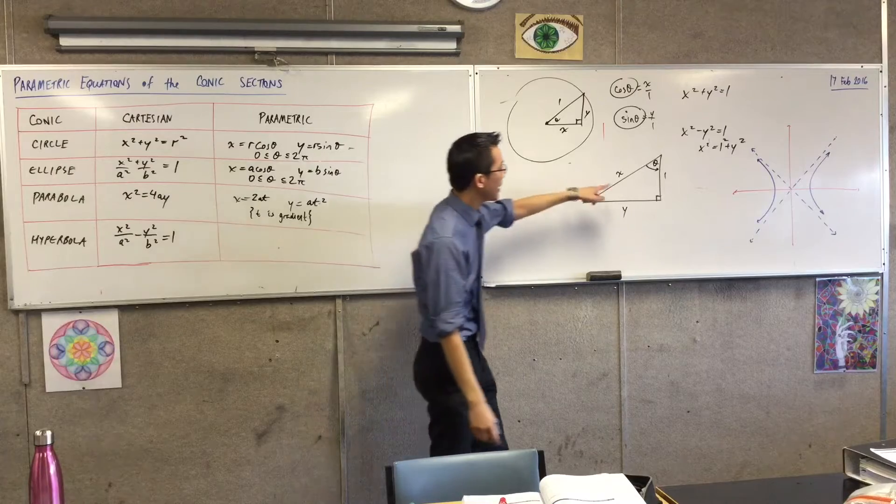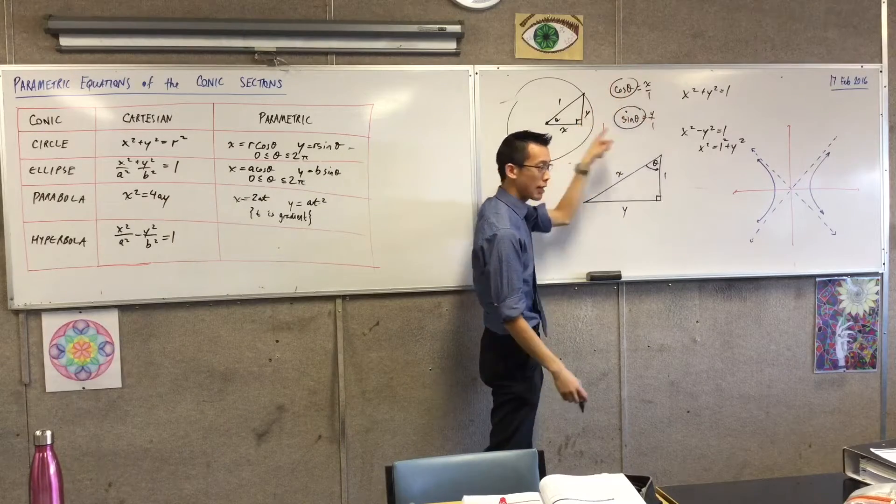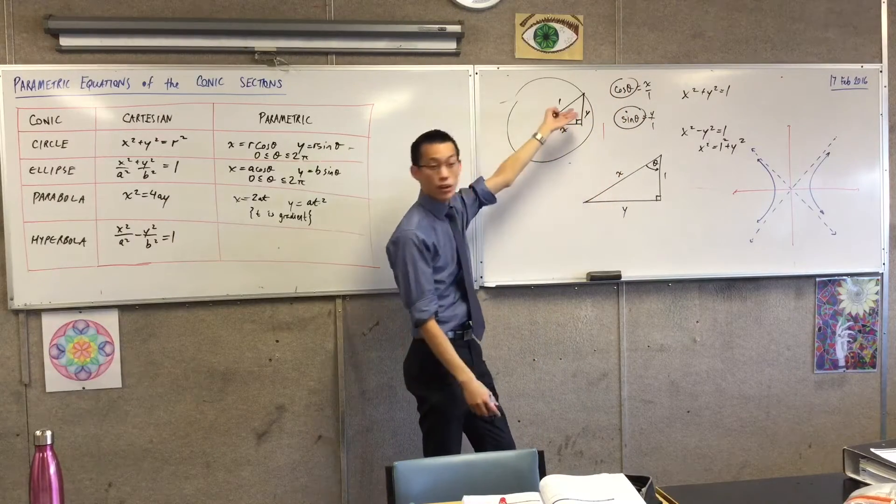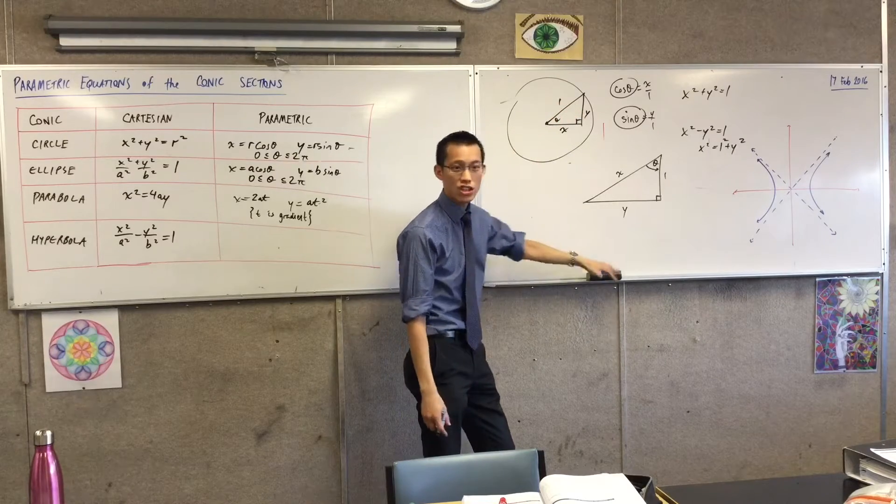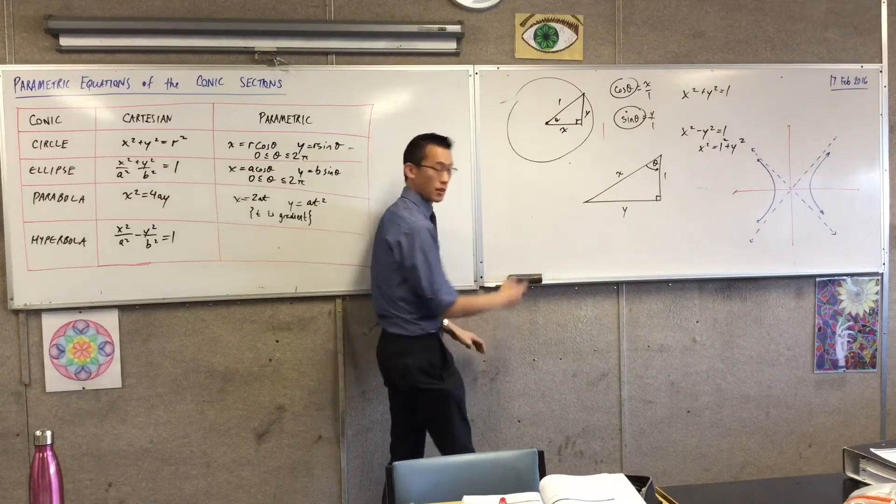If I put theta up there, I can get some relationships, some trig relationships out of this, just like I got out of that binary triangle. What relationships I can go with here? Cos theta equals 1.